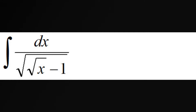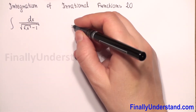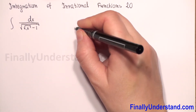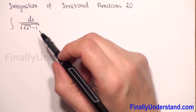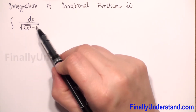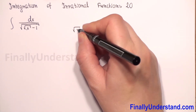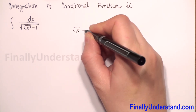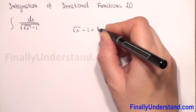First, I will substitute the expression under the square root: let square root of x minus 1 equal t squared. Why t squared? Because we have a square root of this whole expression. So we have square root of x minus 1 is equal to t squared.